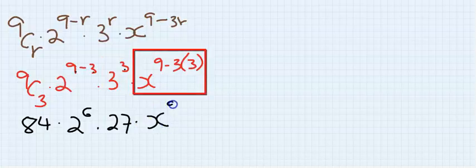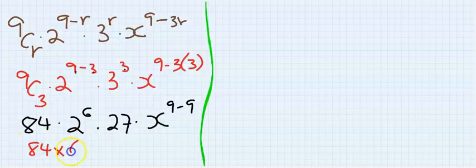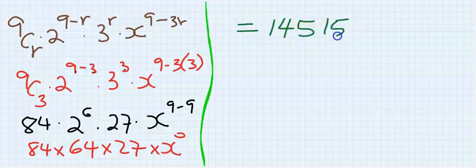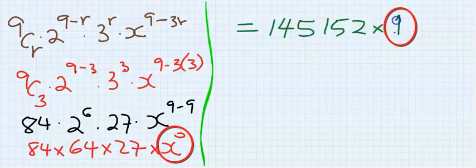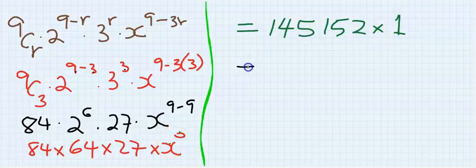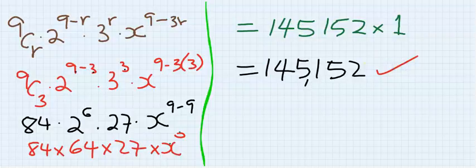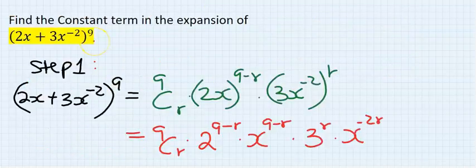This is 84 times 64 times 27 times x to the power of 0, and I have 145,152 times 1. Anything to the power of 0 is 1, and my final answer is this. This is the constant term in this binomial expansion.